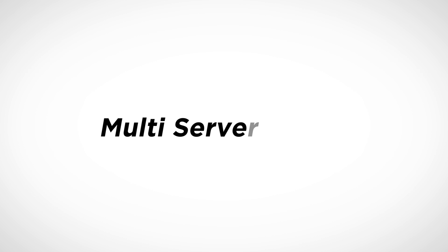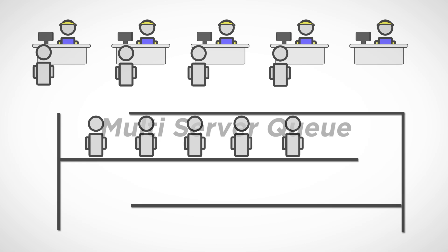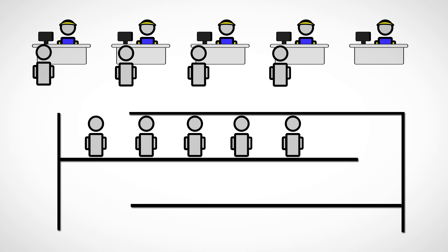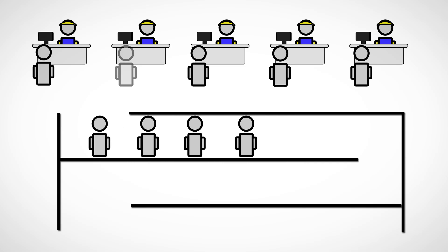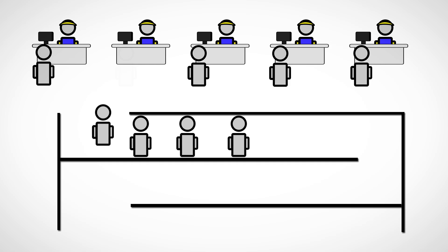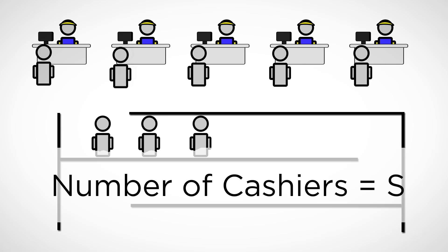Next, we consider the more complicated case of the multi-server queue. In the multi-server queue, as opposed to the single server queue, we have multiple cashiers grouped together with a single line in front of them. In this case, we denote the number of cashiers by the letter S.